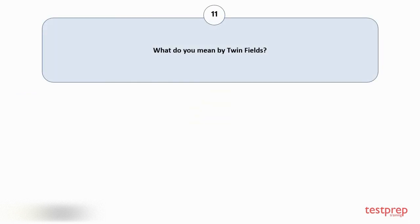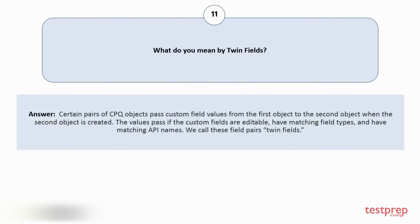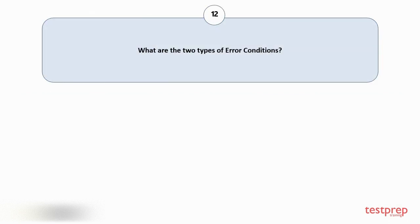Question number eleven: What do you mean by twin fields? Certain pairs of CPQ objects pass custom field values from the first object to the second object when the second object is created. The values pass if the custom fields are editable, have matching field types, and have matching API names. We call these field pairs twin fields.